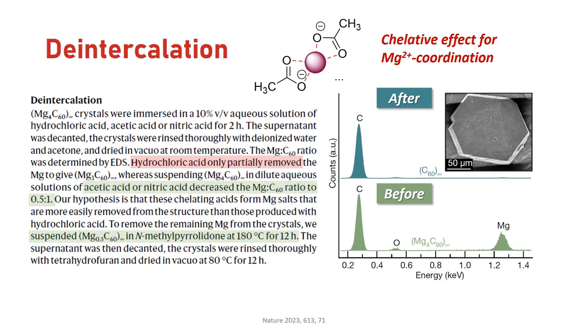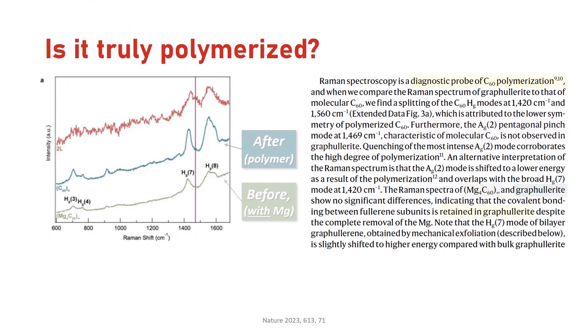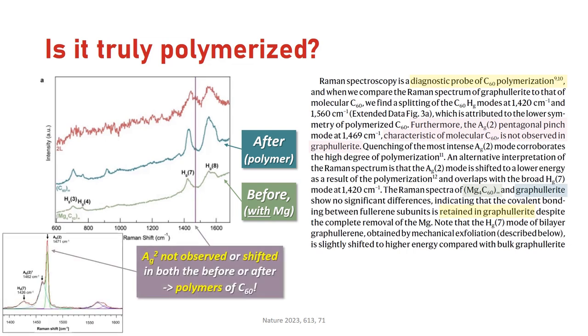You can see that the graphfullerite crystals themselves are still intact. To validate this, they also looked at Raman spectroscopy. Indeed, the two greenish colored before versus after spectra did not look significantly different, so magnesium removal had no impact. These spectra also indicated that this is actually a polymer due to the missing AG2 pentagonal pinch mode. This signal, indicated by the purple line, would be quite characteristic for molecular C60 monomers as you can see in this reference chart. This missing or shifted signal is due to symmetry and molecular orbital changes from the new covalent fullerene bridges. They now had a purely carbon-based C60 graphfullerite material.